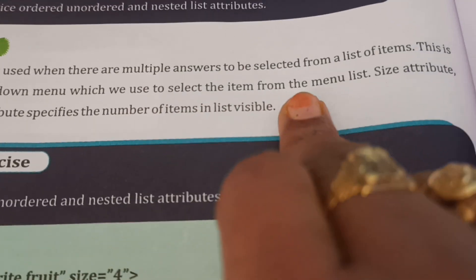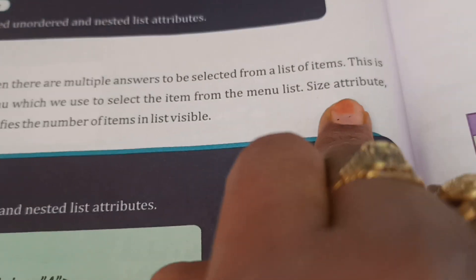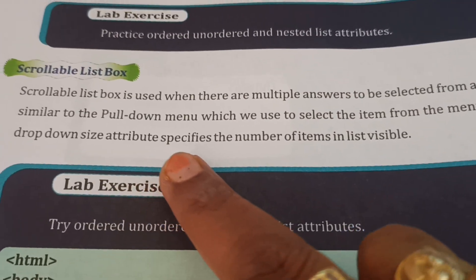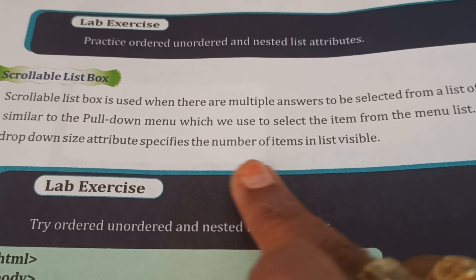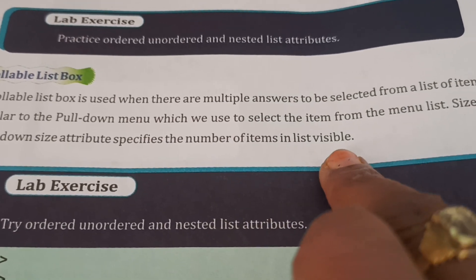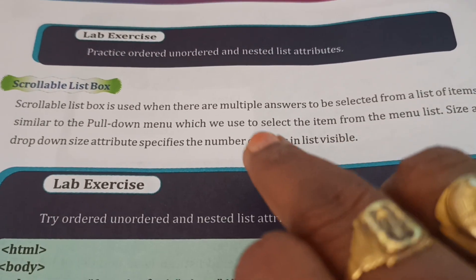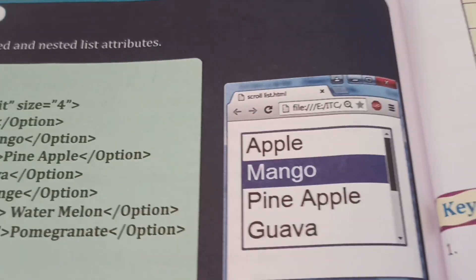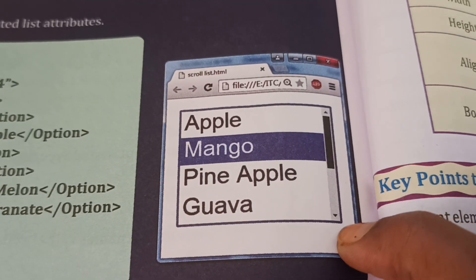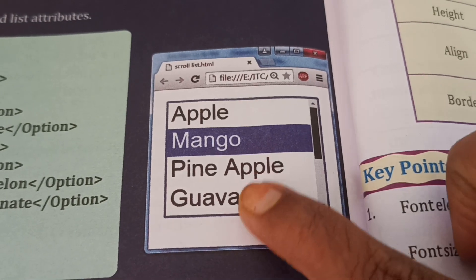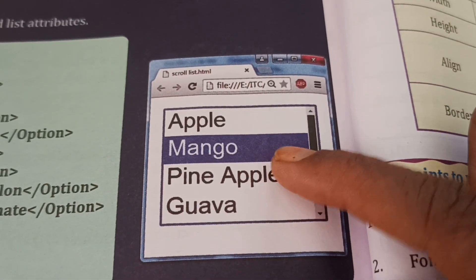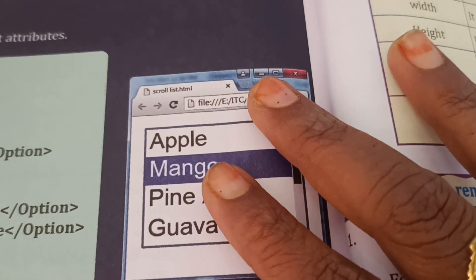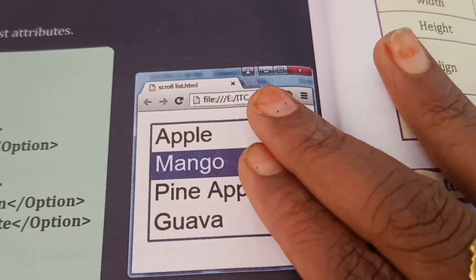Select the item from the menu list. The size attribute - the drop down size attribute - specifies the number of items in the list that are visible. In this topic, let's see the output first. See here, this is the scroll bar. You can click after scrolling through all the items to see what items are in the list.